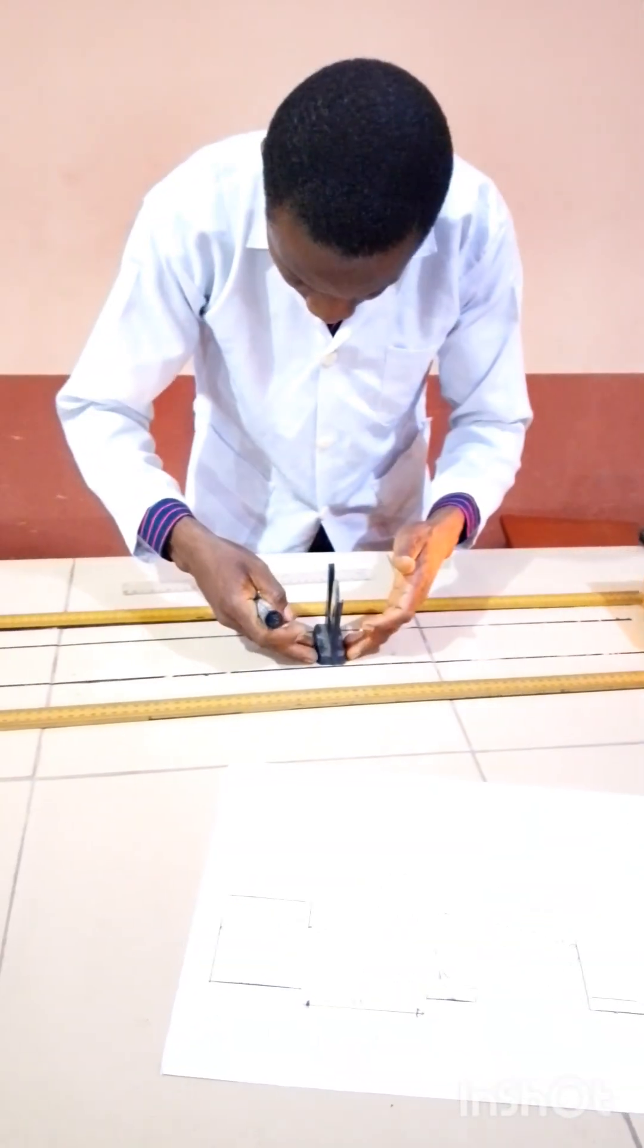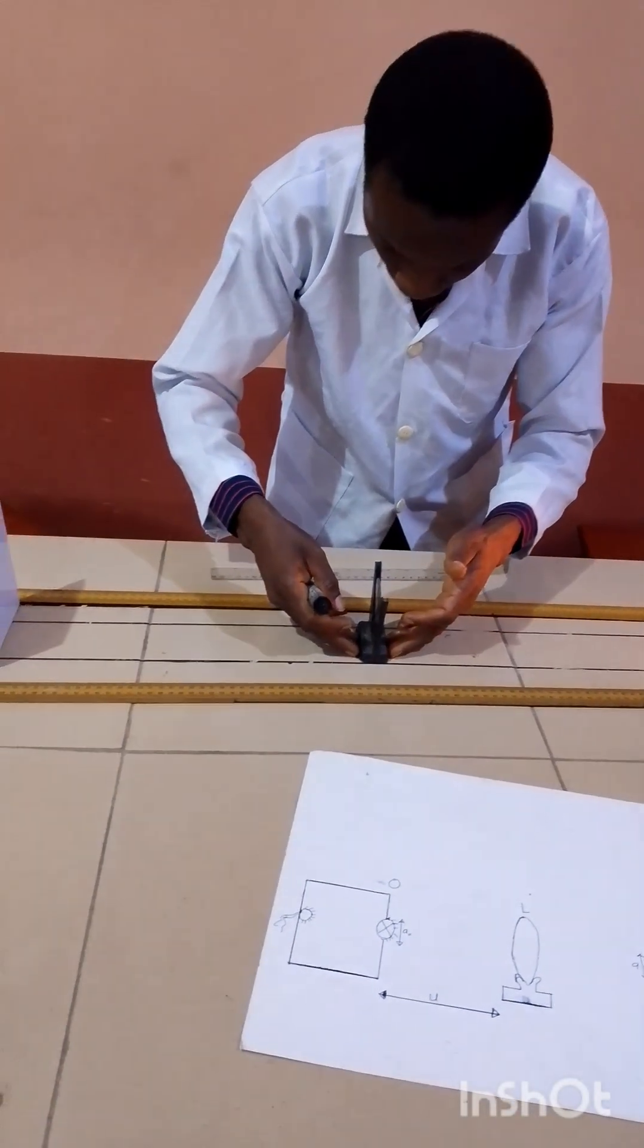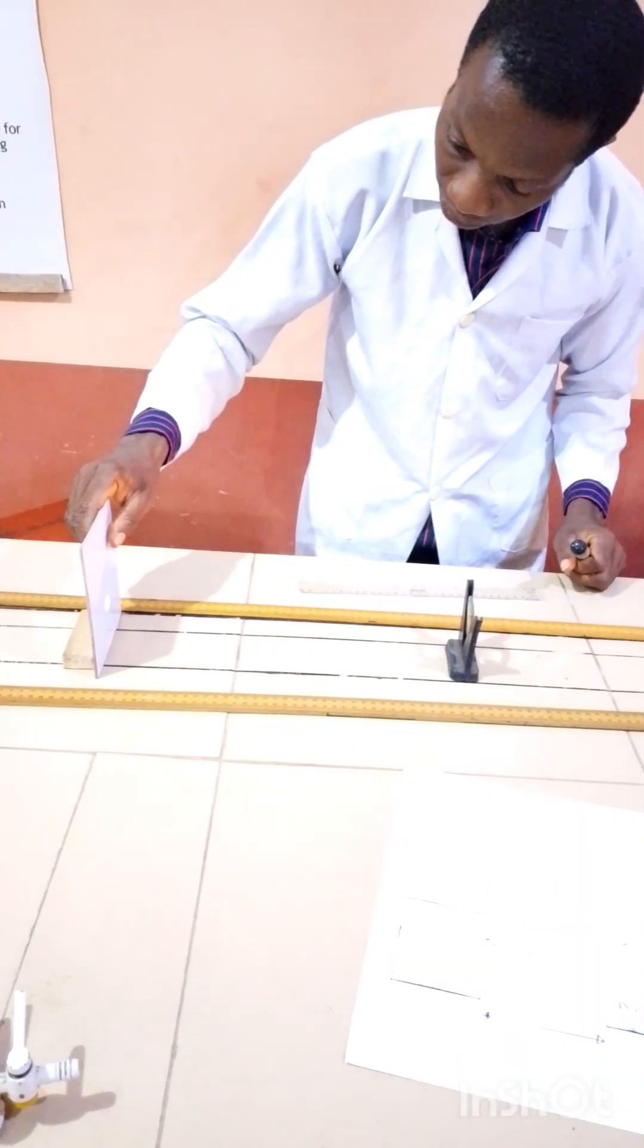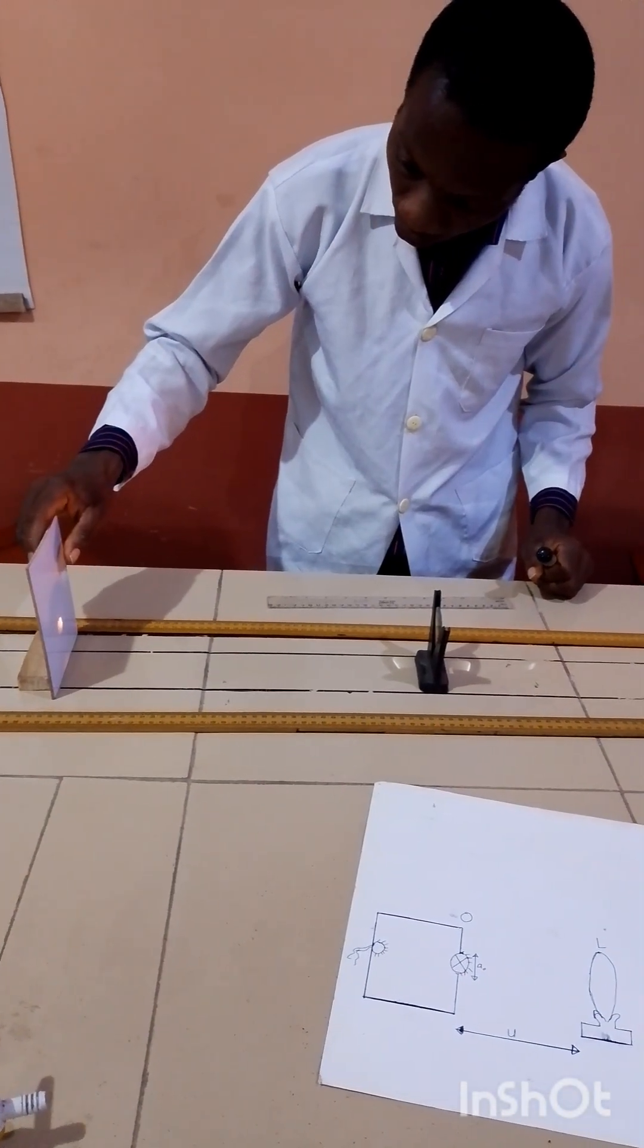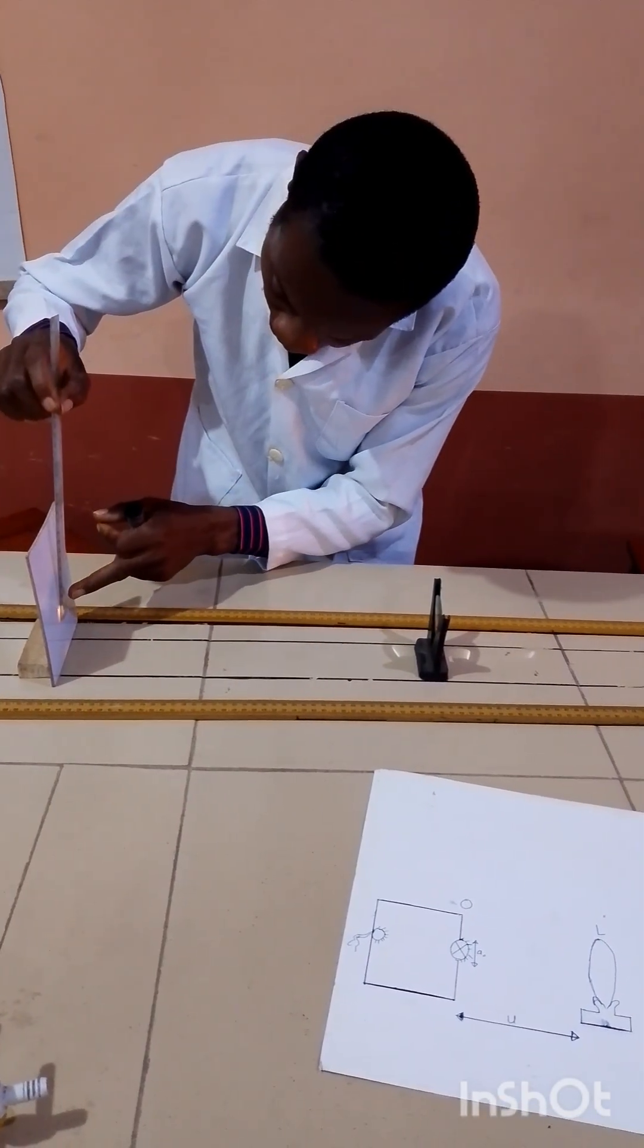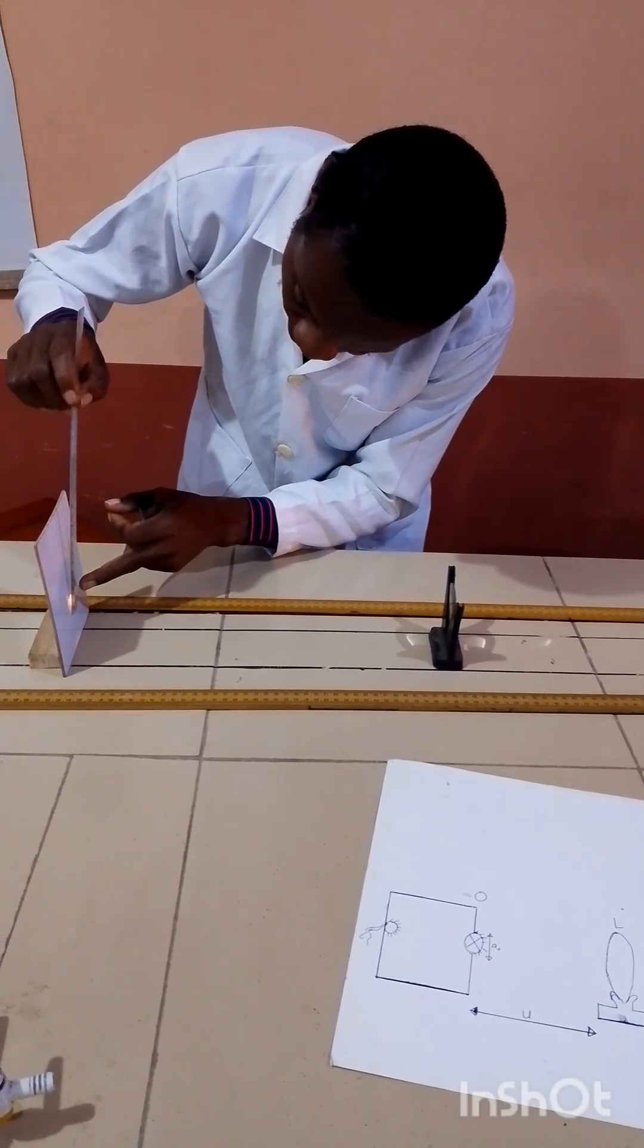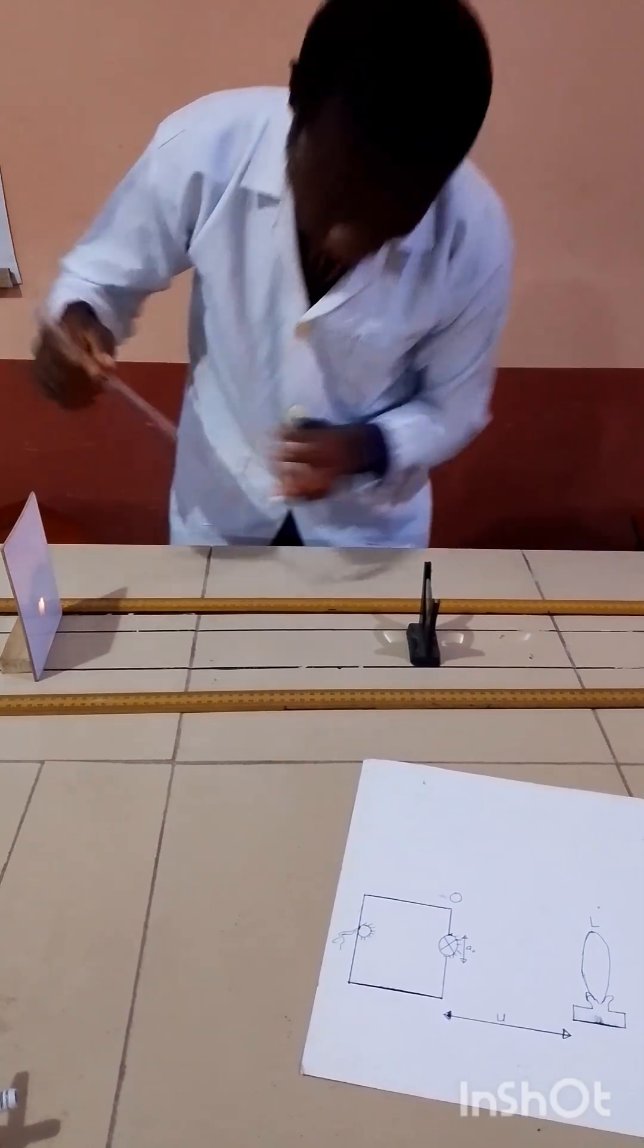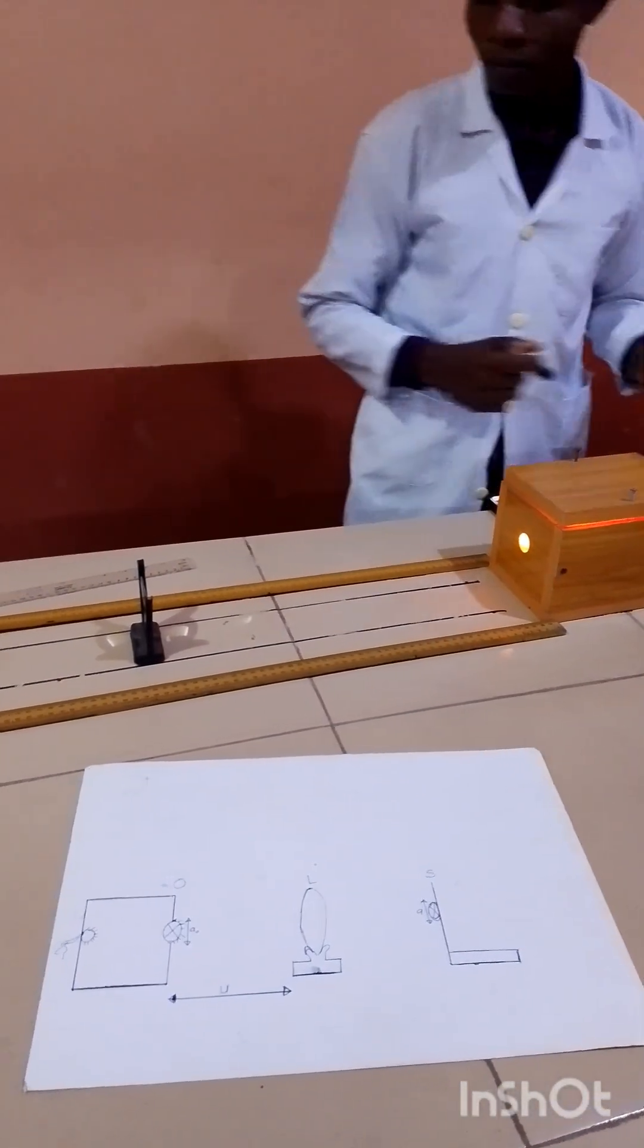Do the same to 45. Move to 45. Then, readjust it again until you get a sharp image of the object. Look at it. I will measure. What we have now is 1.8. So, I will write 1.8.